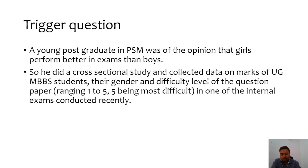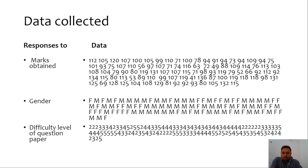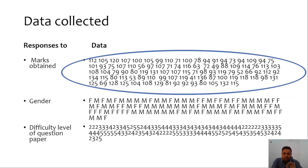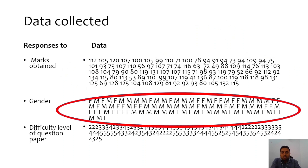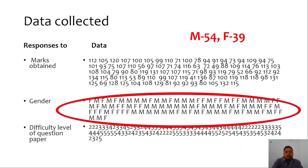This is the data the postgraduate collected. Can you infer anything from this data right now? If this data is not summarized, you will not be able to infer anything from it. Better marks are represented as average marks, so you have an idea about the performance of the class. Now, can you apply a similar thing to gender — can you have something like an average gender? Of course not, because marks obtained is quantitative or numerical data, whereas gender is nominal, qualitative, or categorical data. It can be summarized differently by calculating frequencies and proportions.